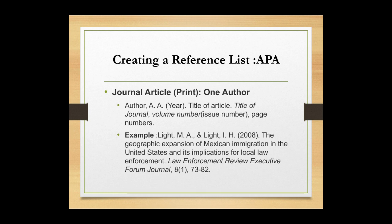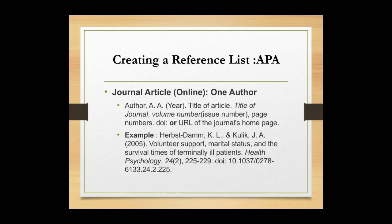For a journal article with one author, put the surname of the author, comma, followed by initials of the first and middle name, the year, the title of the article, the title of the journal, the volume number, issue number, and page numbers. For example: Light M. & Light Uapo — the geographic expansion of Mexican immigration in the United States — Law Enforcement Review, Executive Forum journal, volume 8, issue 1, pages 73–82. For an online journal with one author, it is the same, but you also add the URL of the journal homepage.